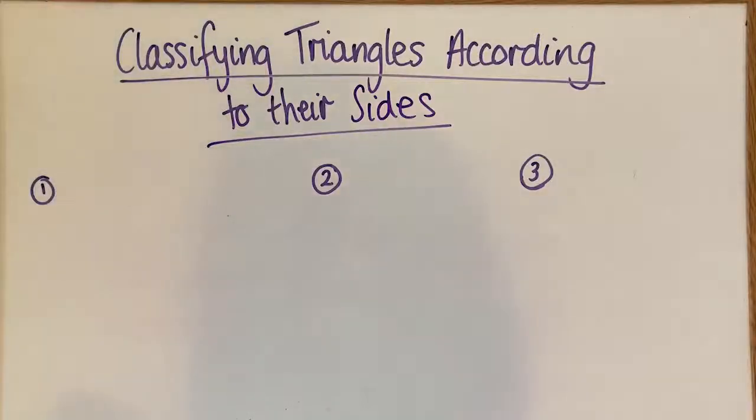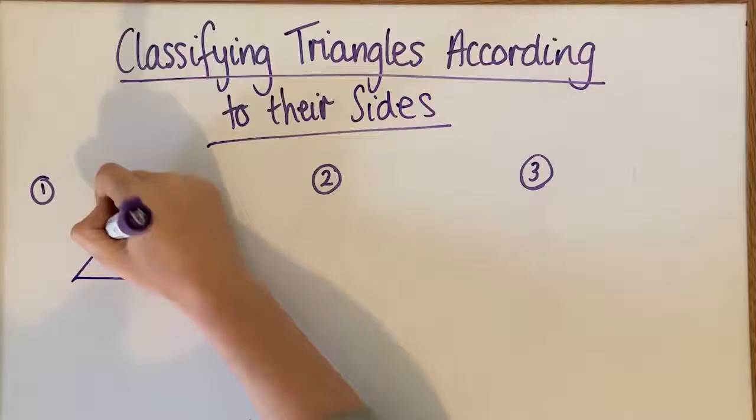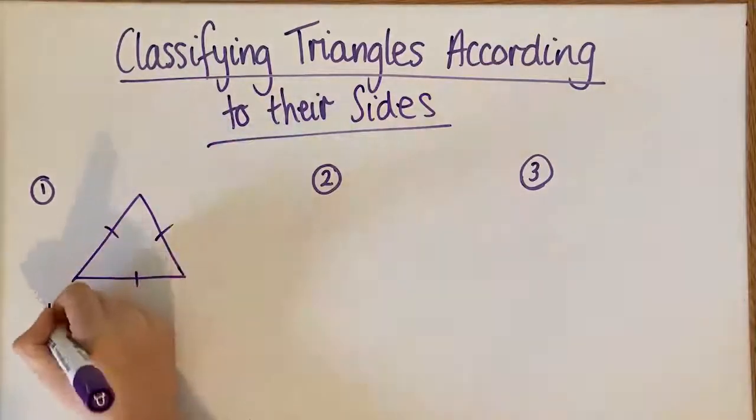So there's three different ways that you can classify triangles according to their sides. Now the first one is called an equilateral triangle.